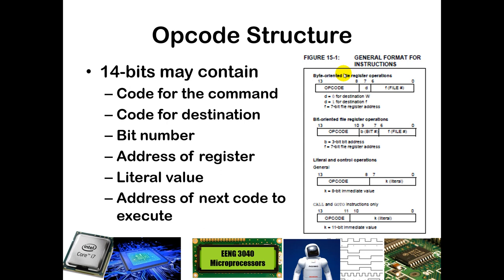Opcodes are structured in different ways depending on the type of command. For byte-oriented commands, you have a destination D — either the W register (D=0) or back into the register itself (D=1) — and then F, which is the address of the register you specify. The first few bits indicate what the command actually is. For bit-oriented commands, the middle bits range from 000 to 111 to indicate which bit (0 through 7) of a given register you are operating on. Literal-oriented commands have an 8-bit K value for the literal. Commands like calls and go-tos need more address space and so have more bits for the literal.